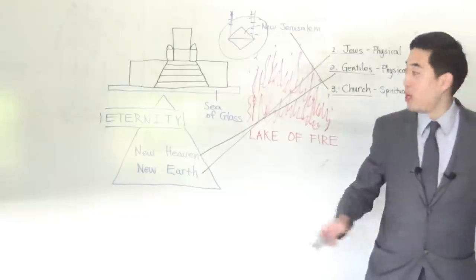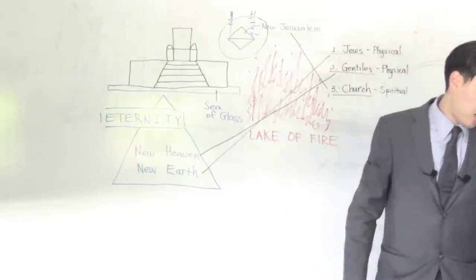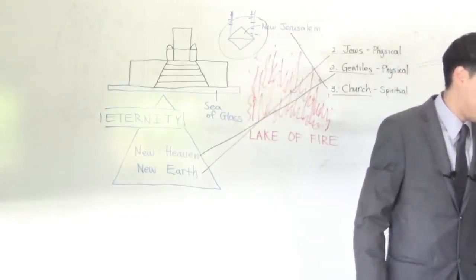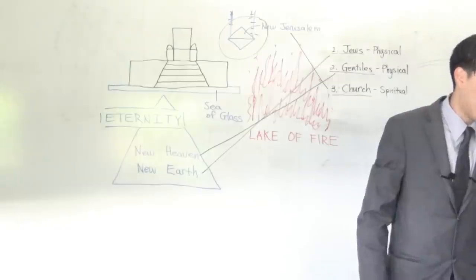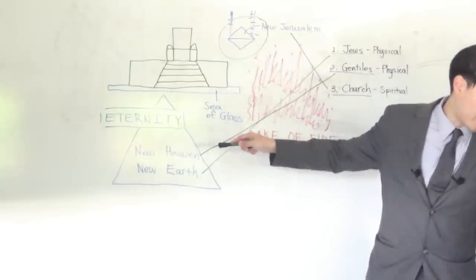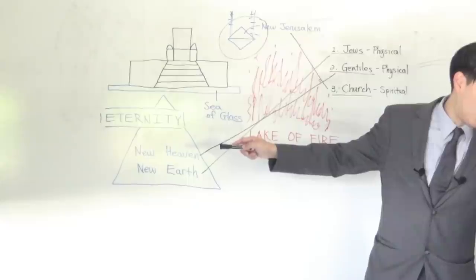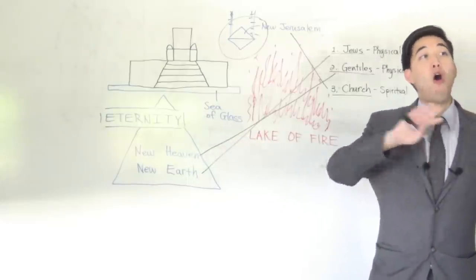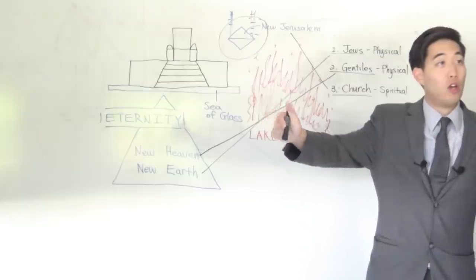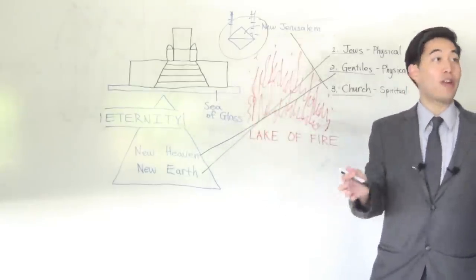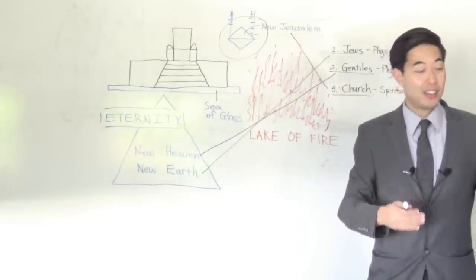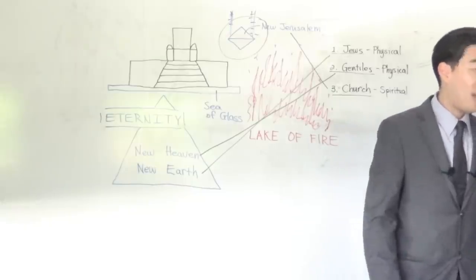The tabernacle of God is with men. Now mankind has access to God, and He will dwell with them. So God's gonna dwell with mankind, and they shall be His people. Why? All the unbelievers are cast out, so anyone throughout all the universe are now God's children. That's a blessing.